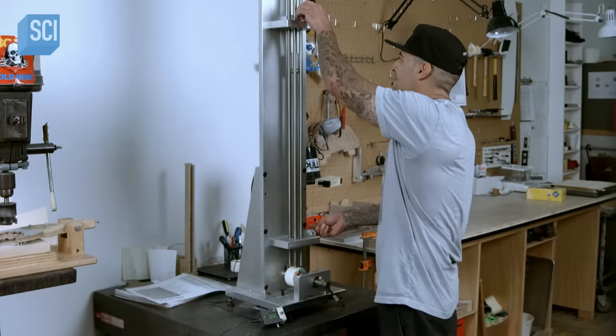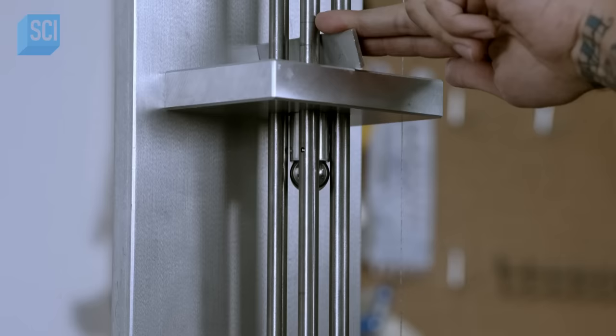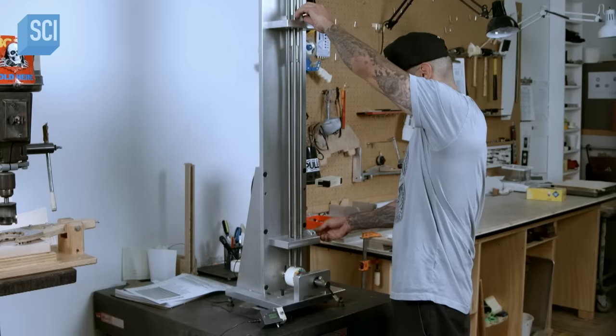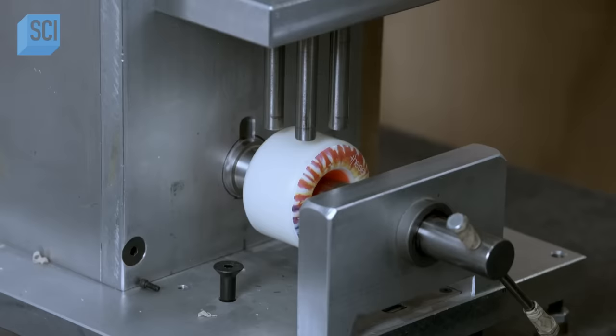A technician now clamps one of the wheels in a testing device, which will gauge the rebound. He drops a metal ball onto the wheel and measures how high it bounces or rebounds.